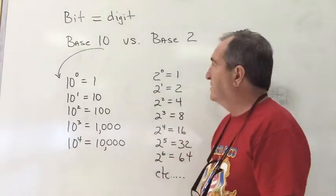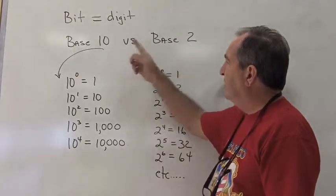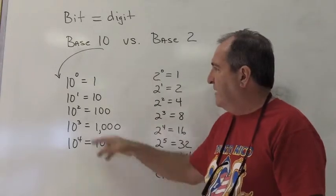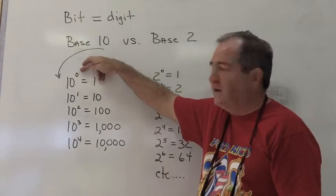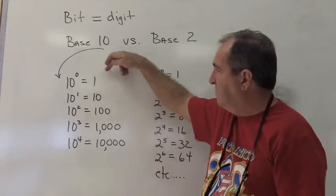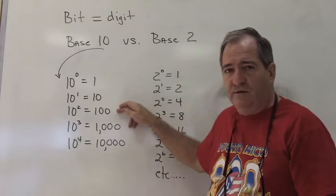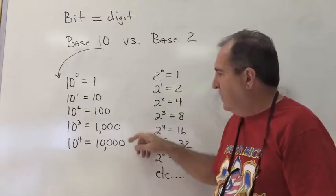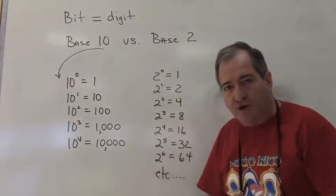But first, let's look at the binary system by comparing it with the base 10 system, which we use for normal decimal numbers. We have a base 10 and we raise it to either the 0 power, and anything to the 0 power, of course, is 1. 10 to the 1 is 10. 10 squared is 100. 1,000 for 10 to the cubed. And 10 to the 4th power, 10,000. And so and so forth. This goes on and on.